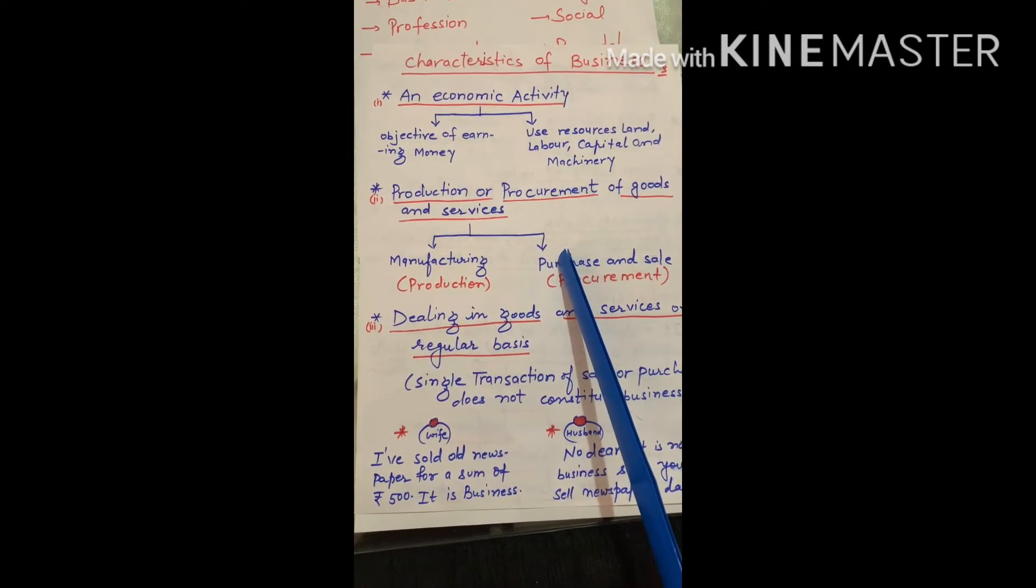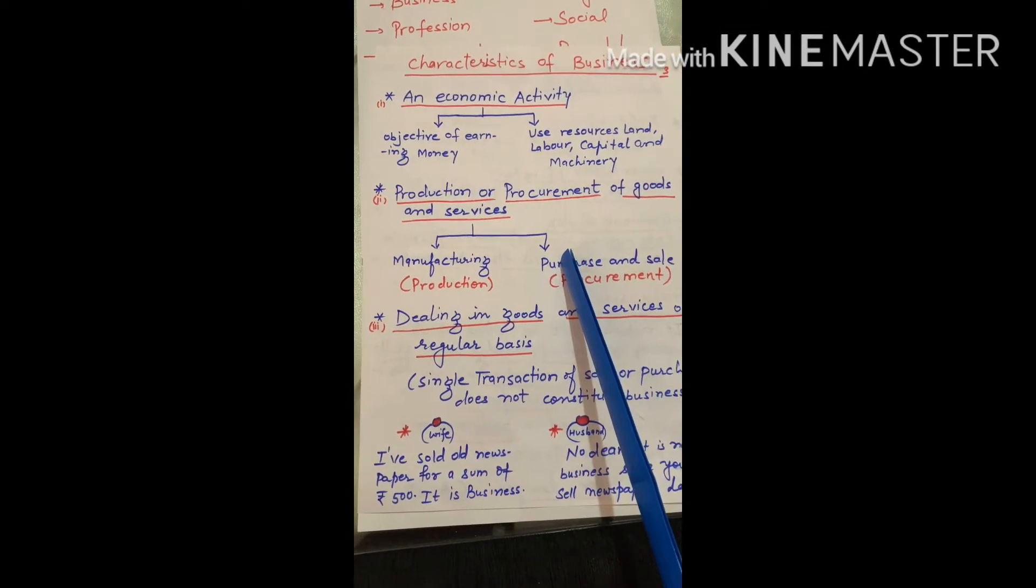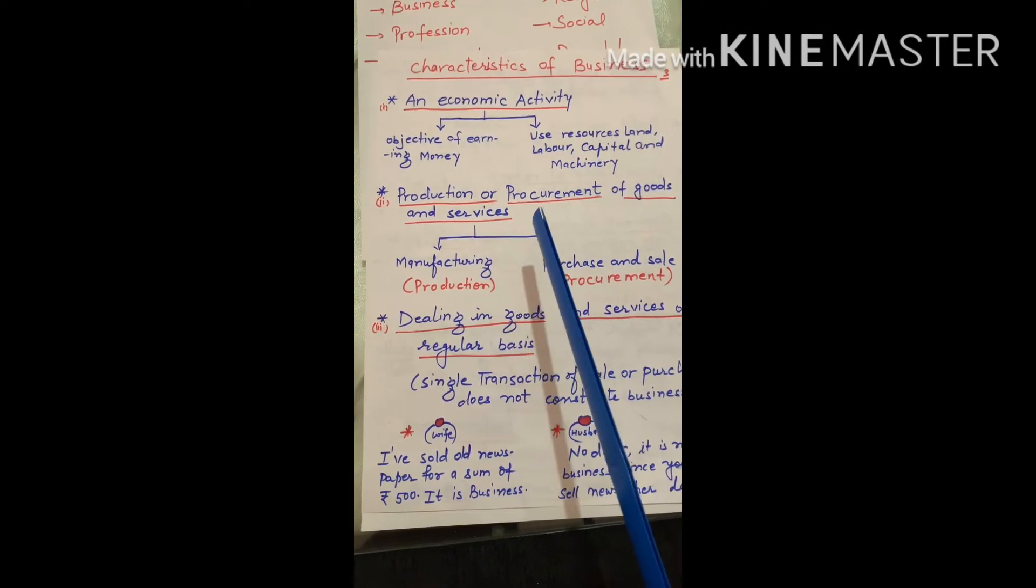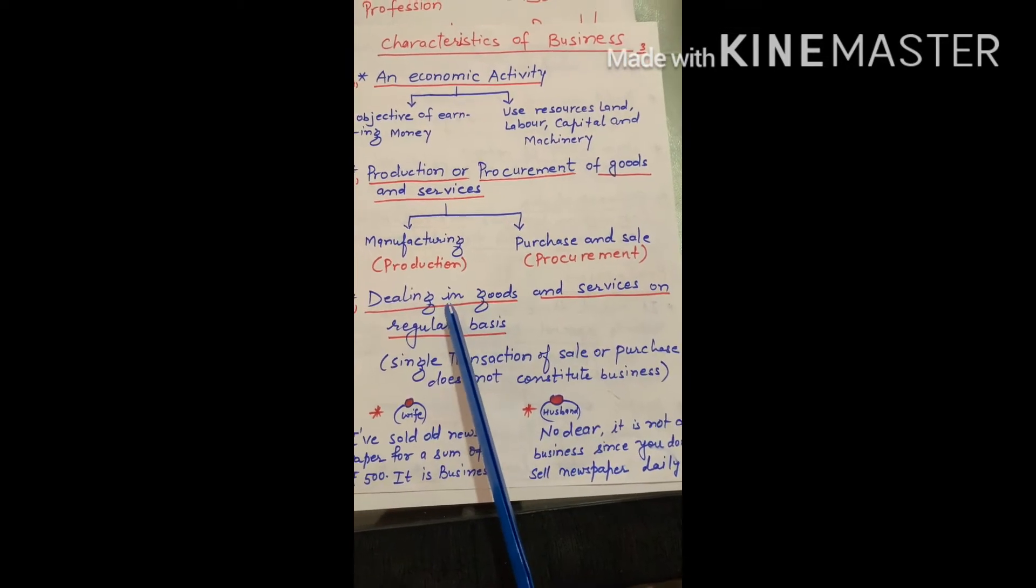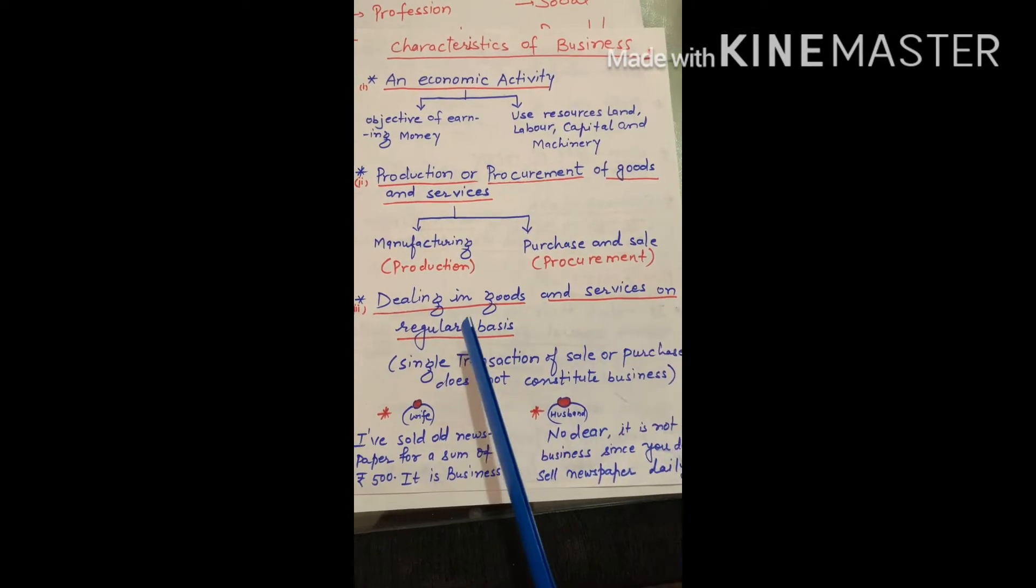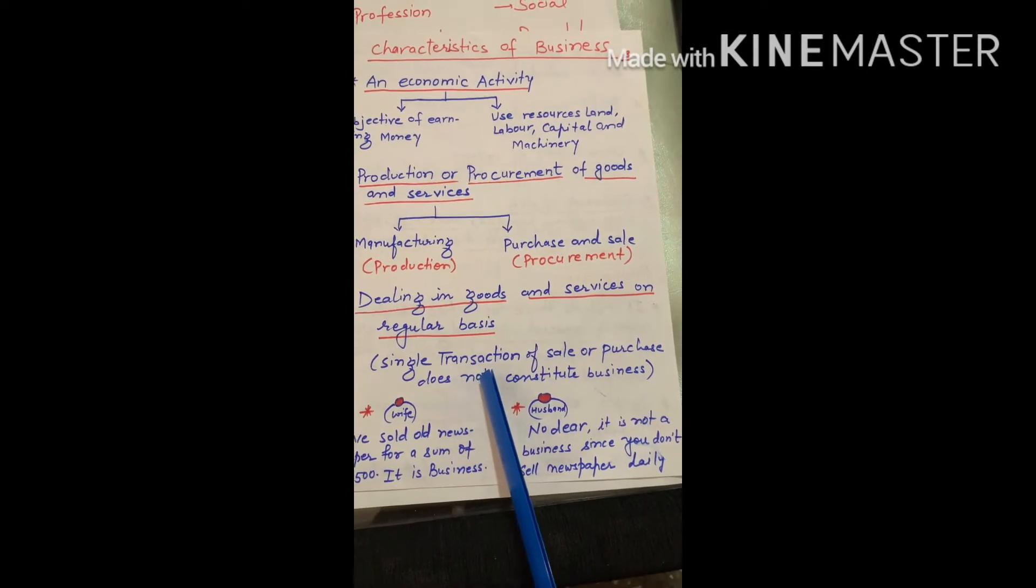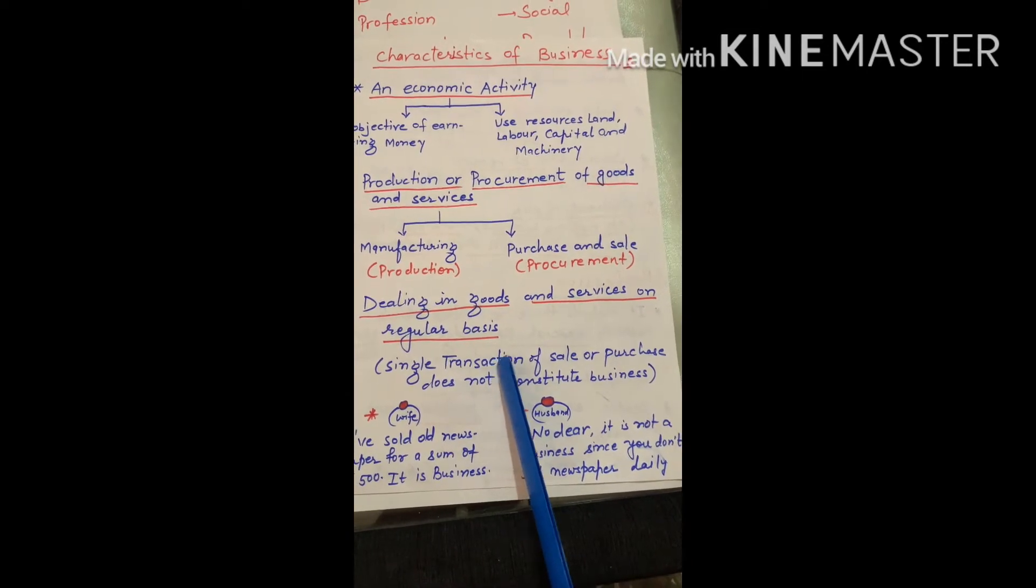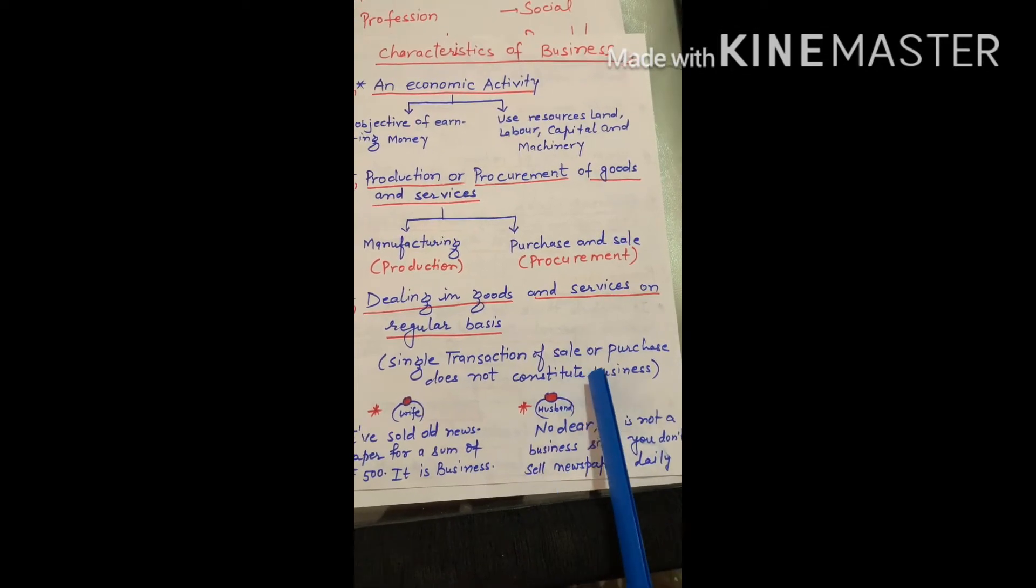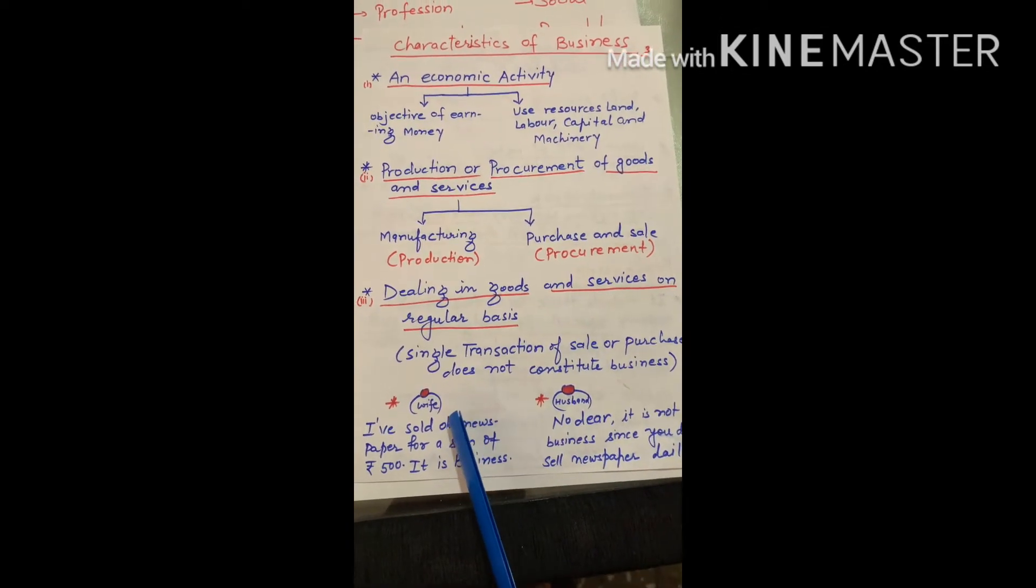Bakery markets biscuits. This is production and procurement of goods and services. Third is dealing in goods and services on regular basis. Business is a regular activity. A single transaction is not called a business.